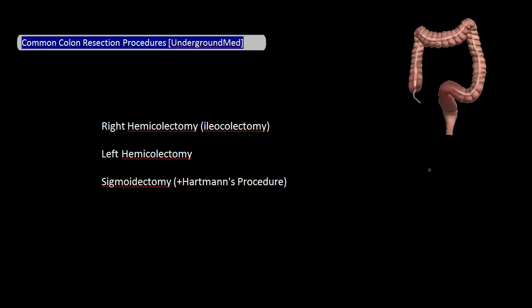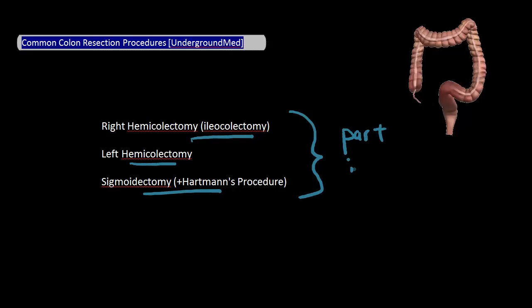In this video, I want to do a very general overview of some of the more common colon resection procedures. The major ones we'll cover are the right hemicolectomy, left hemicolectomy, and the sigmoidectomy, including its variations such as the Hartman's procedure. The focus will be on the parts of bowel that are removed, the indications for the procedure, and where a colostomy bag is placed, if at all.